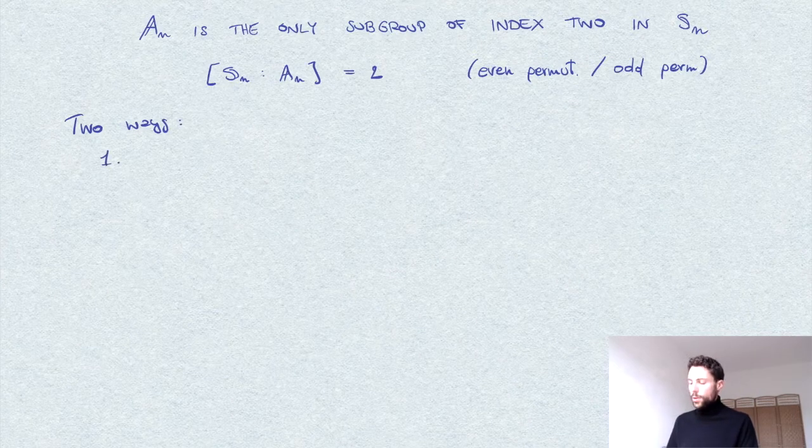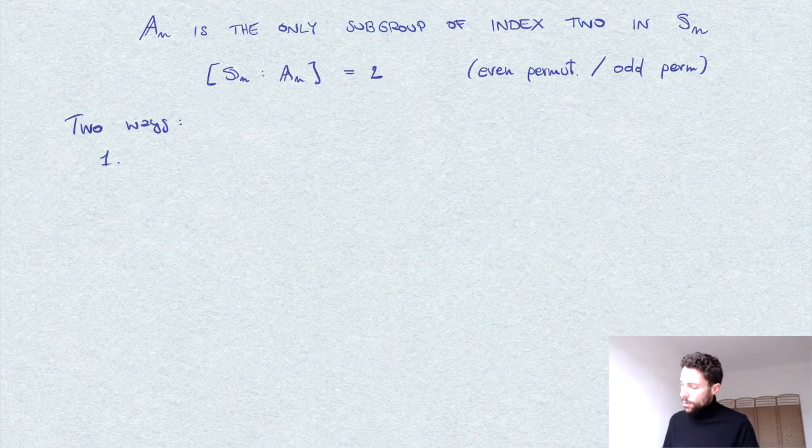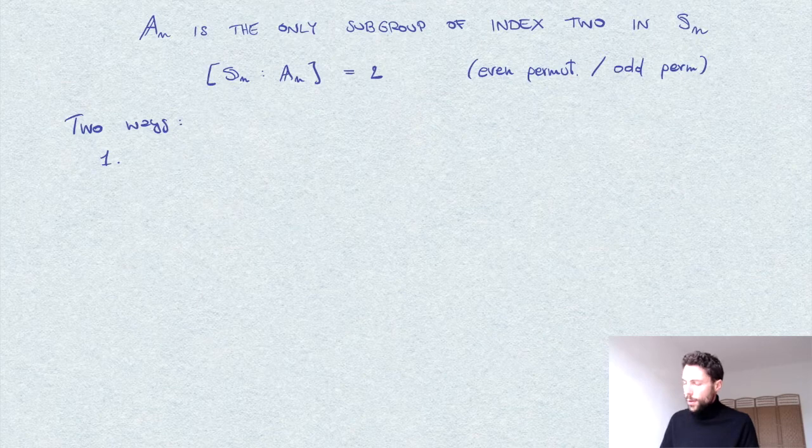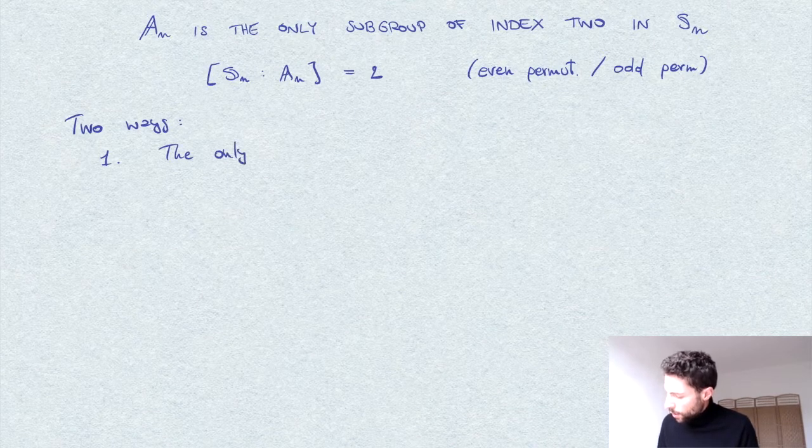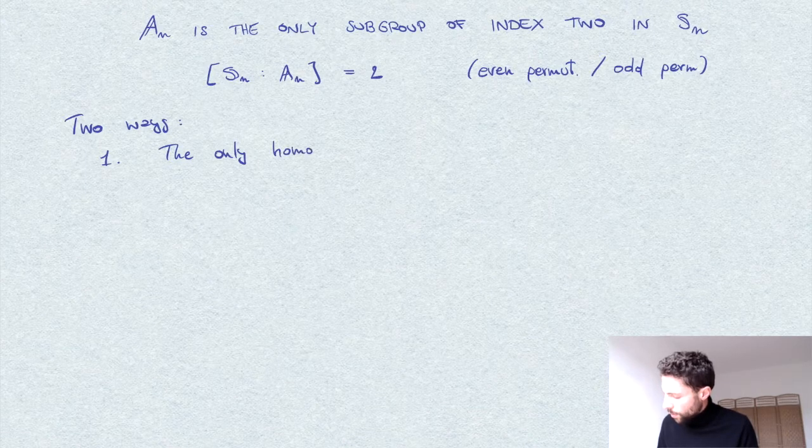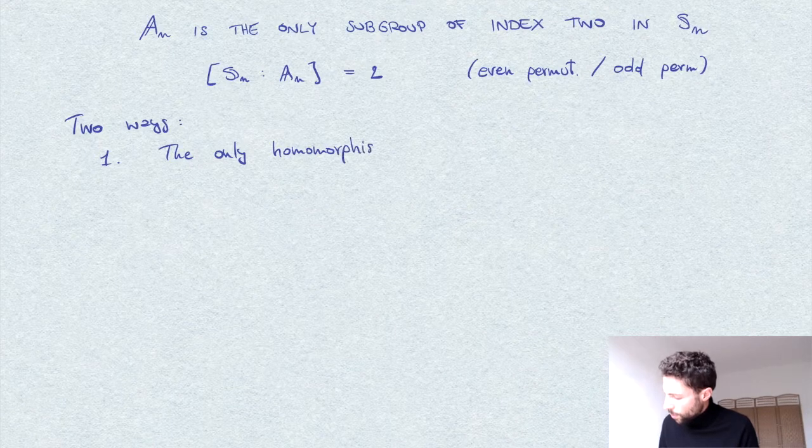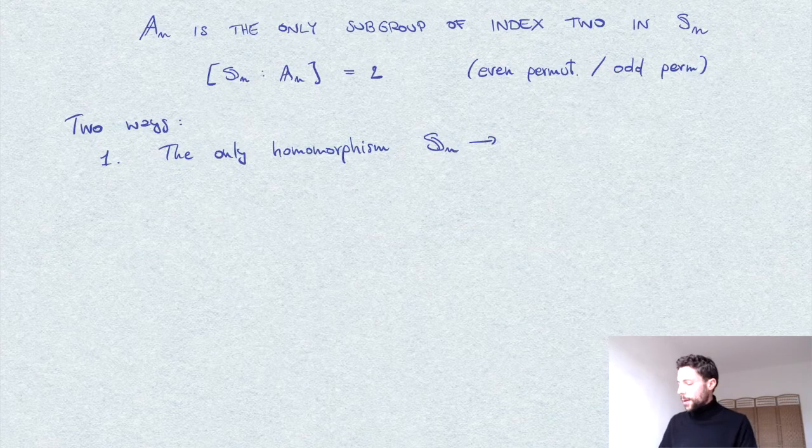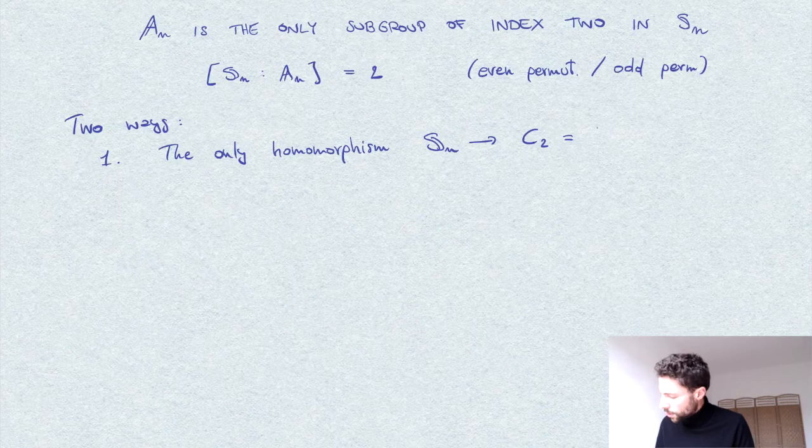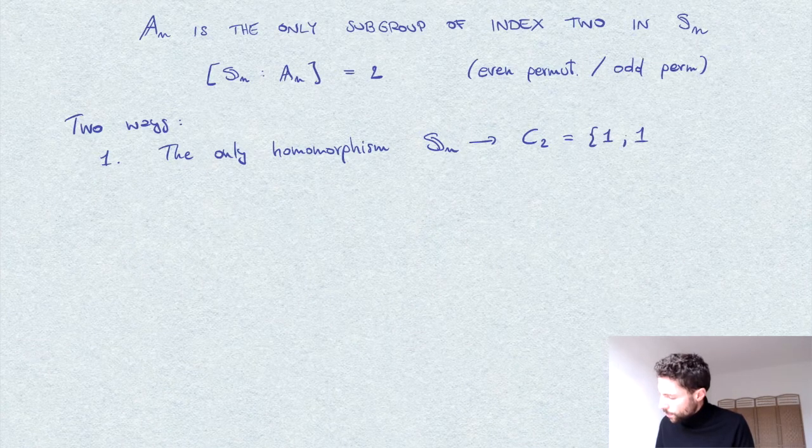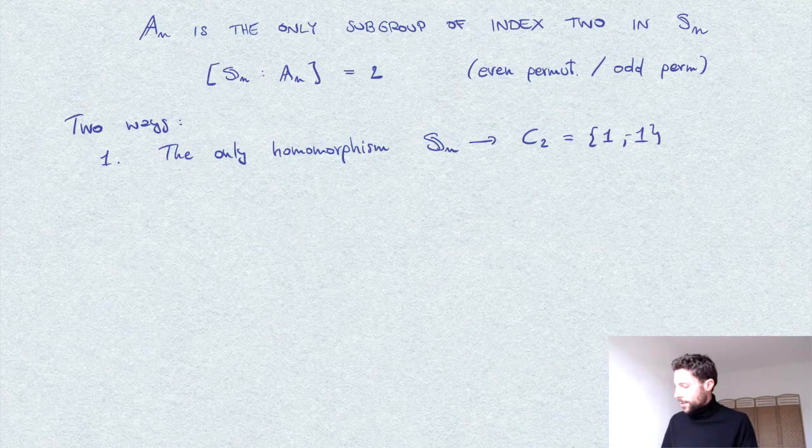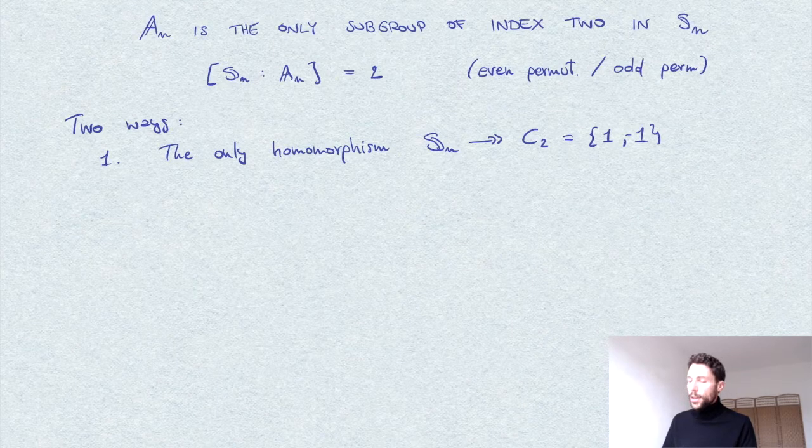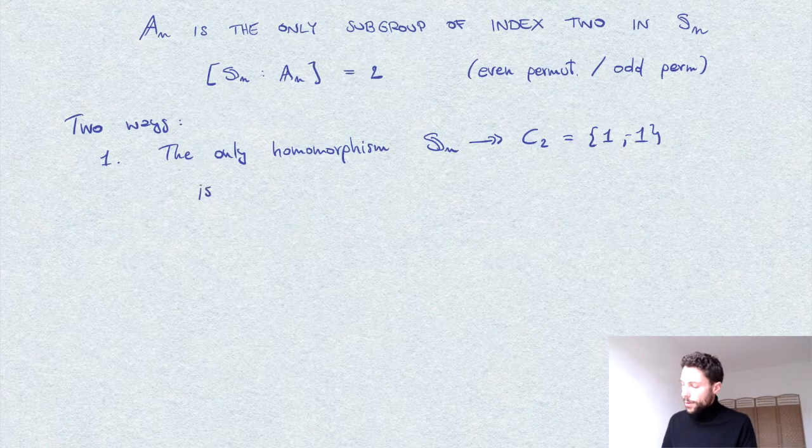Number one. For the first way I want to use this fact that the only homomorphism from S_n to the group, the cyclic group of two elements in multiplicative notation, C_2, the group consisting of one and minus one. The only, apart from the trivial homomorphism, the only surjective homomorphism from S_n to C_2 is the one given by the sign function.